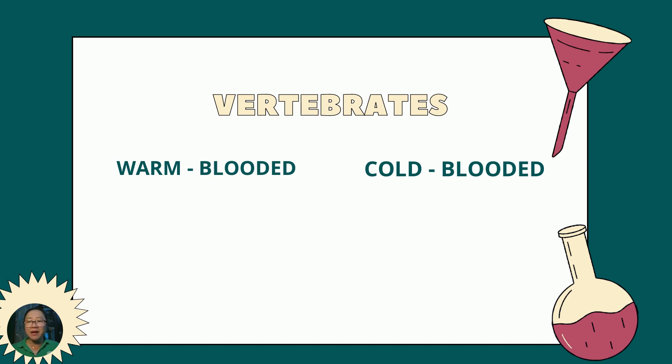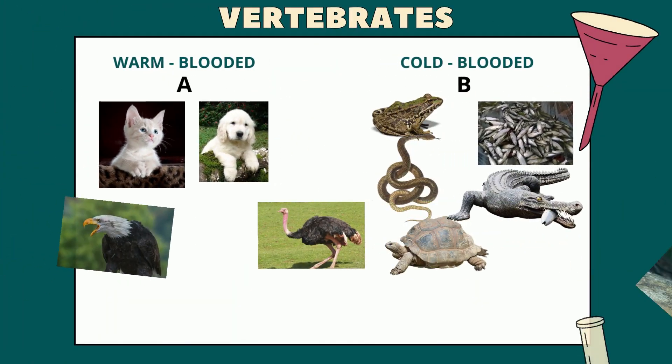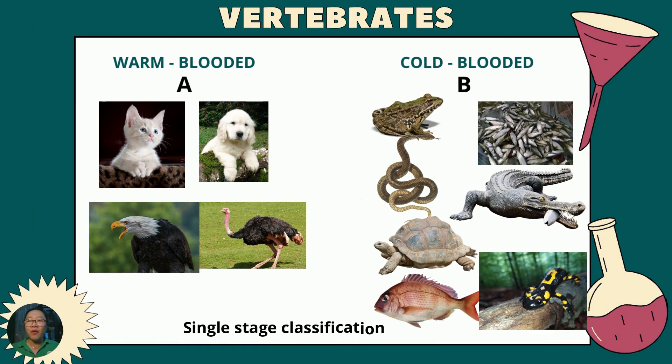Warm-blooded animals are animals that are capable of maintaining an early constant body temperature irrespective of the temperature of the environment, while cold-blooded animals are the animals that are not capable of regulating their body's temperature according to the temperature of the environment. Warm-blooded vertebrate animals include the dog, cat, ostrich, and eagle. We label this as A.